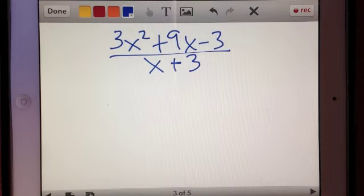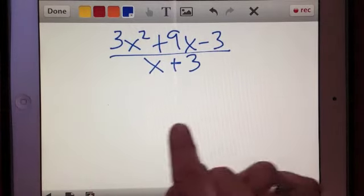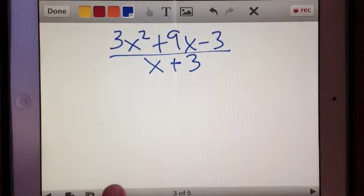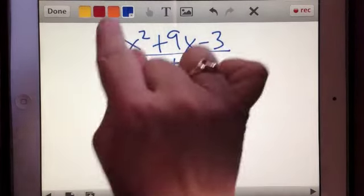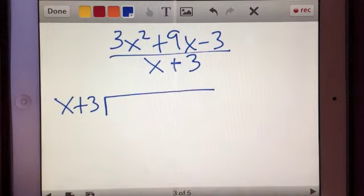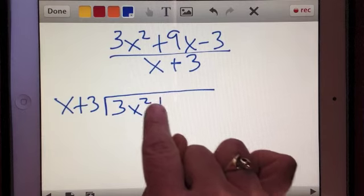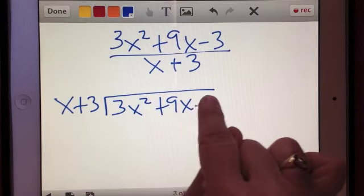Here's a rational expression. This particular rational expression is 3x squared plus 9x minus 3 divided by x plus 3. So I will rewrite this in long division form.